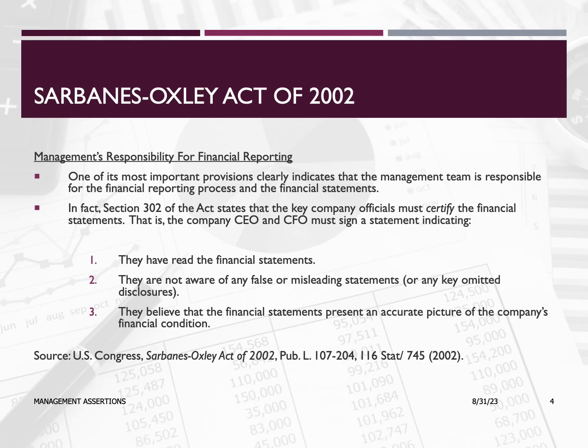SOX places significant responsibilities on management to ensure the accuracy, transparency, and integrity of a company's financial reporting process. For example, CEOs and CFOs are required to provide certifications in the company's quarterly and annual reports, confirming their responsibility for financial statements and internal controls over financial reporting. These certifications affirm that the financial statements are accurate, the internal controls over financial reporting have been evaluated, and any identified weaknesses or fraud have been reported. These responsibilities aim to ensure investor confidence, prevent accounting fraud, and maintain the integrity of financial markets.